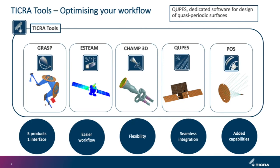Before going into details of the design, a few words about the software tool and method used for this work. For the design of the modulated FSS subreflector, we used the direct optimization design procedure adopted in the TICRA software Qubes. Qubes is a dedicated software tool for the design of quasi-periodic surfaces such as reflect arrays, transmit arrays, and frequency-selective surfaces. It is one of the five products included in the TICRA tools framework and is particularly suited to what we are trying to achieve in the current work.